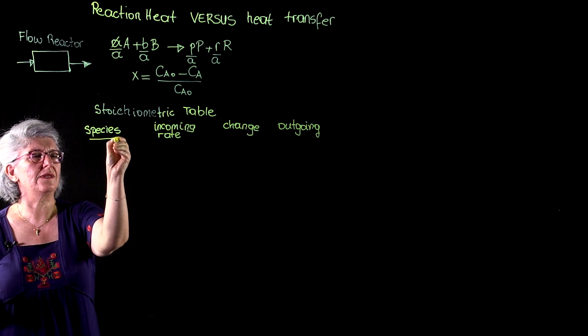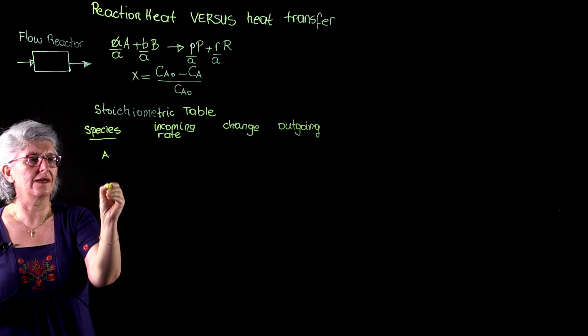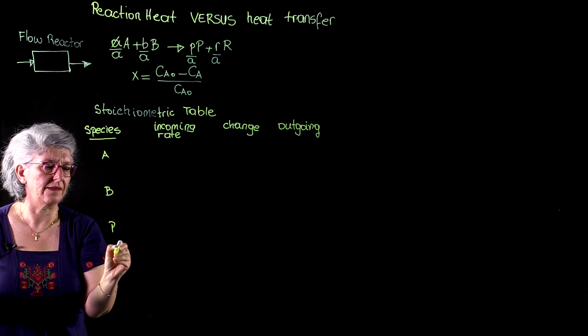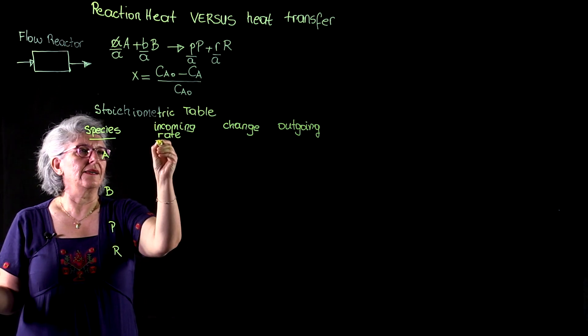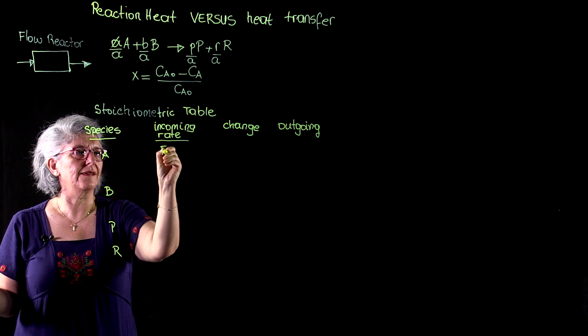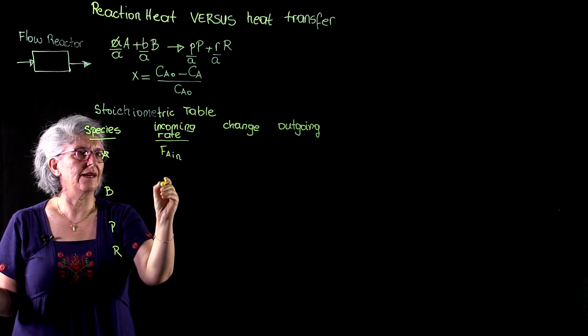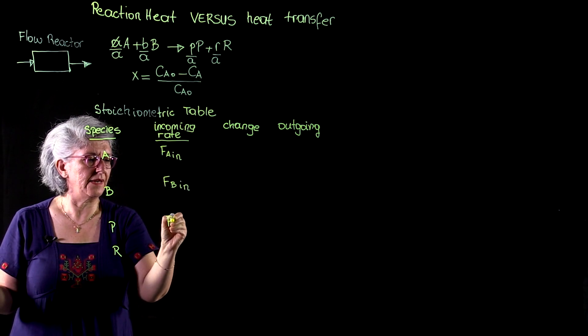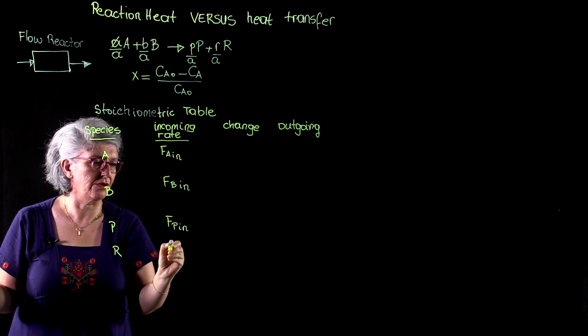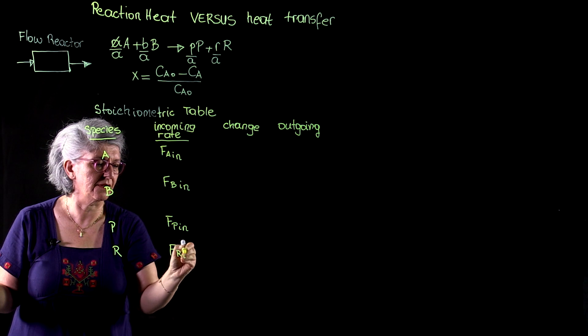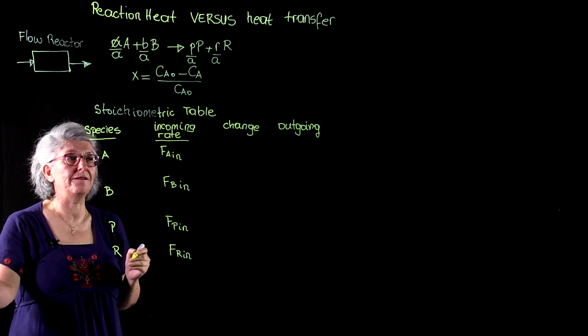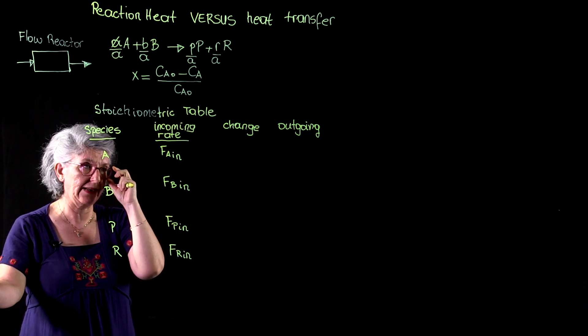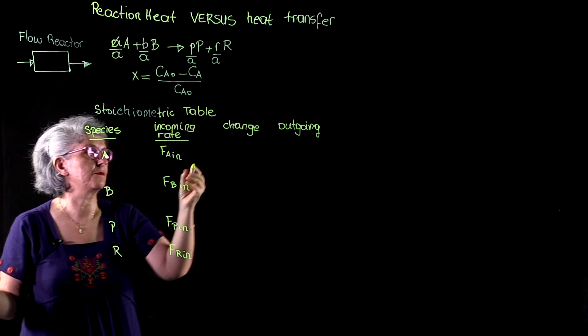So our species are A, B, P, and R. The incoming rate is FA in, FB in. Let's have P and R also at the inlet streams. We may have a recycle reactor where we couldn't purify the product and some P and R leaks into the incoming stream, for example.